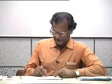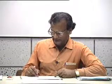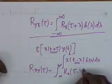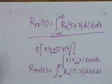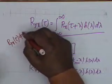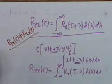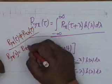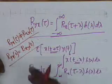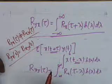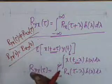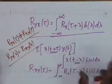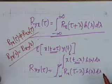Notice that R_XY(τ) is not necessarily equal to R_YX(τ); these two are not necessarily equal. But if you put τ = 0, they are absolutely identical, and therefore R_YX(0) = R_XY(0). The cross-correlation coefficient at τ = 0 has no particular physical significance other than obeying the inequality |R_XY(τ)| ≤ √(R_X(0) · R_Y(0)).